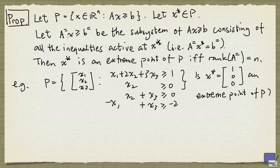To determine if it's an extreme point, we need to come up with this subsystem. So, the first three inequalities are satisfied with equality by x*. These are the inequalities active at x*. But this one is not because the left hand side is going to be -1, whereas the right hand side is -2. So in this case,